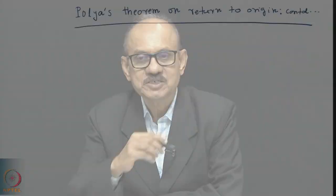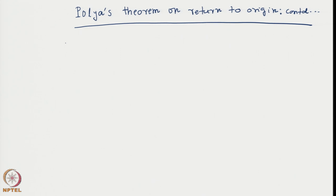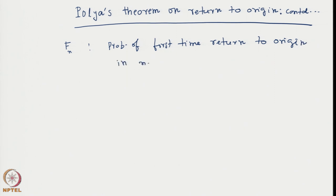Let us continue with Pólya's theorem regarding the problem of return to the origin. We introduced two different concepts: one is the return probability F_n, which is the probability of first time return to origin in n steps, and the second is the occupancy probability at the origin at the nth step.